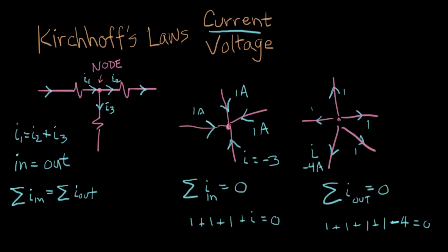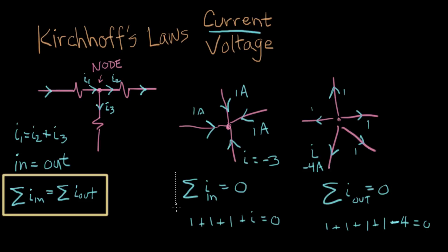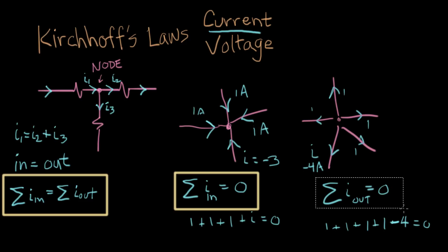That's the idea of Kirchhoff's current law. We reasoned through it from first principles, because everything that comes in has to leave by some route. We can express it as currents in equals currents out, or define all currents pointing in with their sum equal to zero, or define all currents pointing out with their sum equal to zero — you have your choice of any of these three. We'll use this all the time when we do circuit analysis.